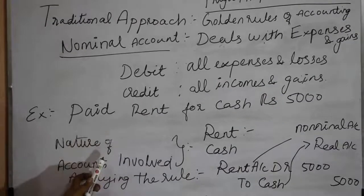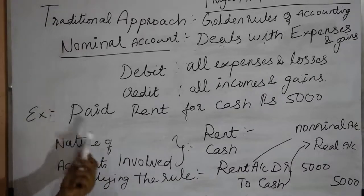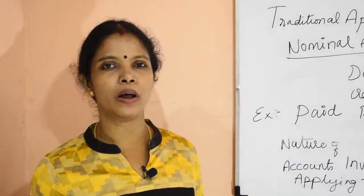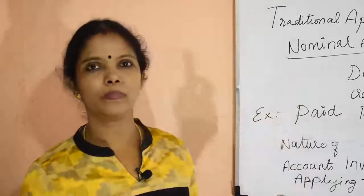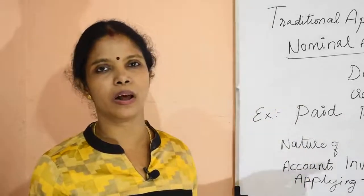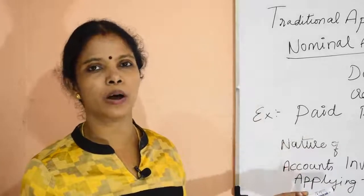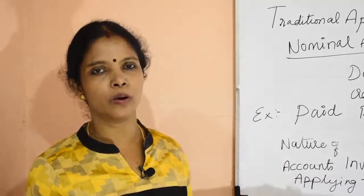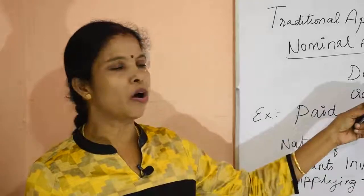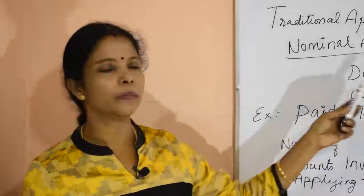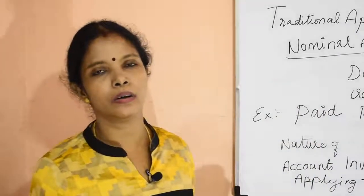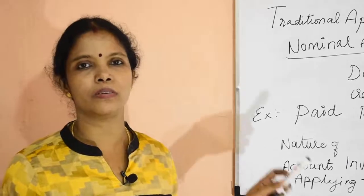Now you would have understood all the golden rules of accounting — the personal account, real account, and nominal account. Personal account: debit the receiver, credit the giver. Real account: debit what comes in, credit what goes out. Nominal account: debit all expenses and losses, credit all incomes and gains. This is the most important aspect in journalizing transactions, so go through this regularly so that you can understand the concept properly.